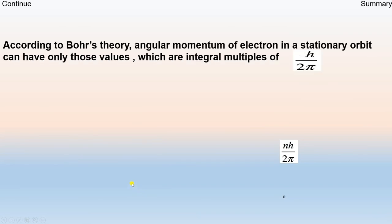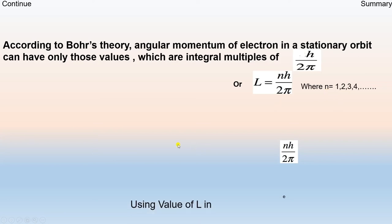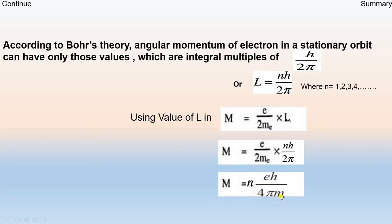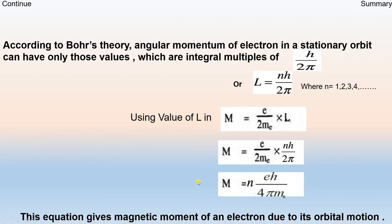According to Bohr's theory, L = Nh/2π. So M = (e/2Mₑ) × (Nh/2π) = NEh/4πMₑ. This equation gives the magnetic moment of the electron due to orbital motion.